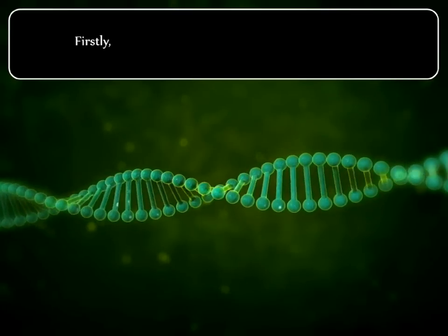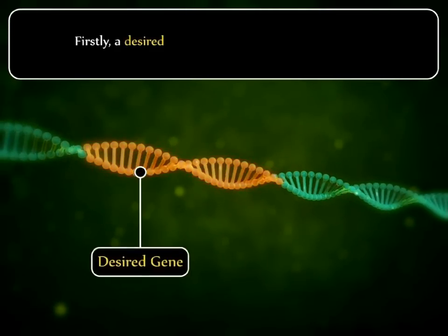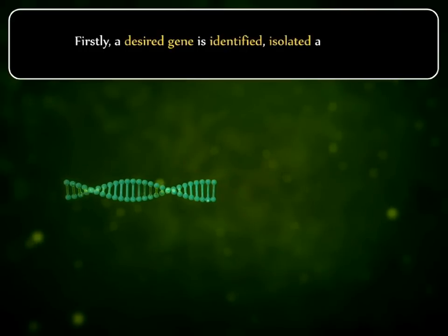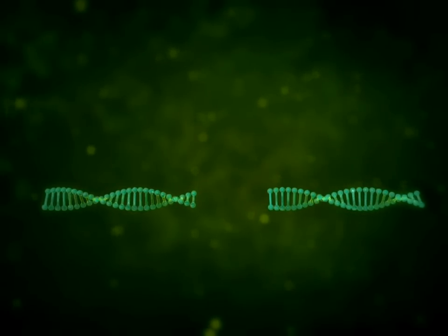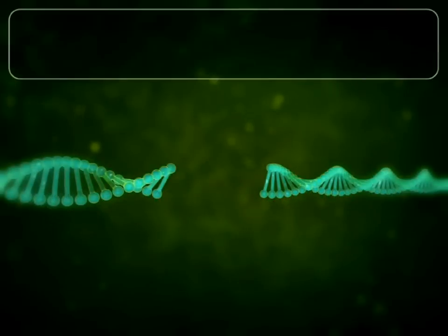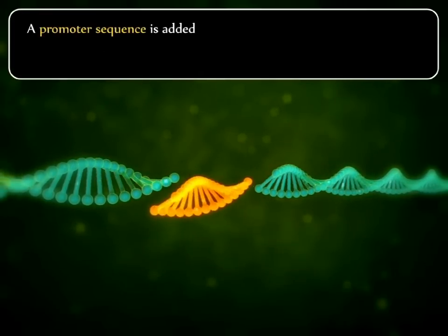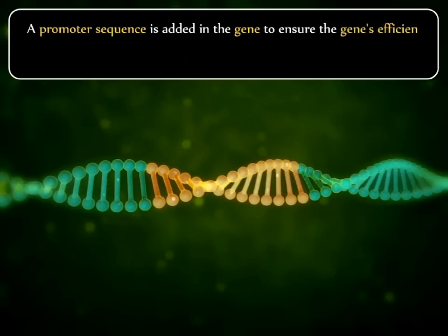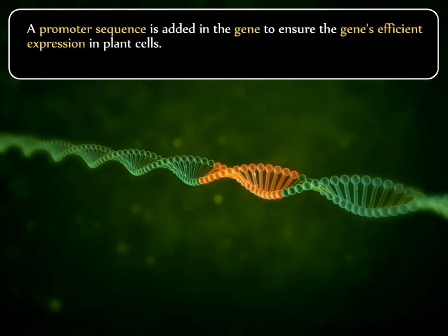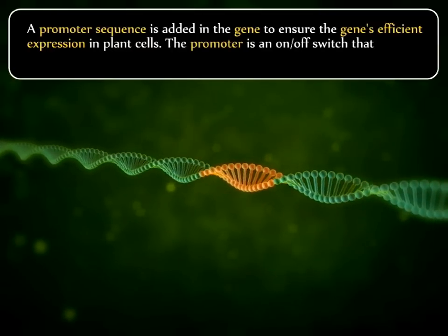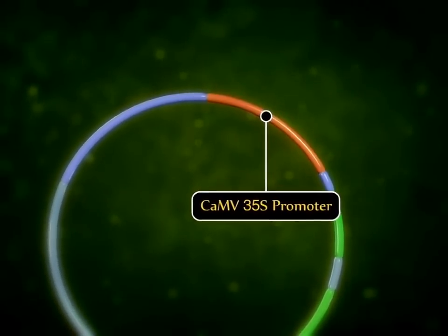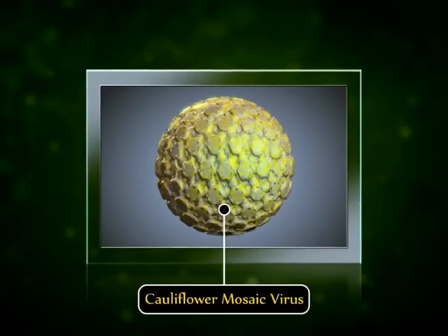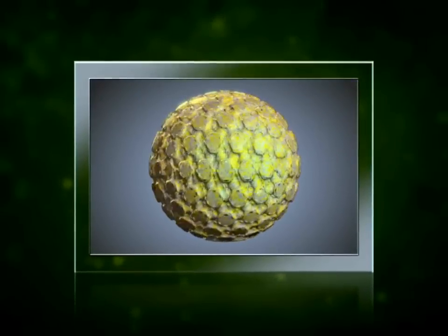Let us understand how transgenic plants are made. Firstly, it is necessary to obtain the desired gene. The desired gene is identified, isolated and cloned. This gene undergoes certain modifications before it can be effectively inserted into a plant. A promoter sequence is added to the gene to ensure the gene's efficient expression in plant cells. The promoter is an on-off switch that controls when and where in the plant the gene will be expressed. The most commonly used promoter is CaMV35S from the Cauliflower Mosaic Virus, which generally results in a high degree of expression in plants.